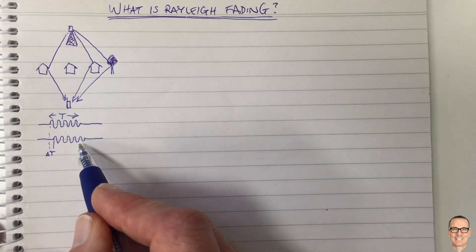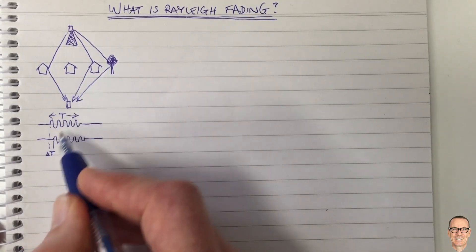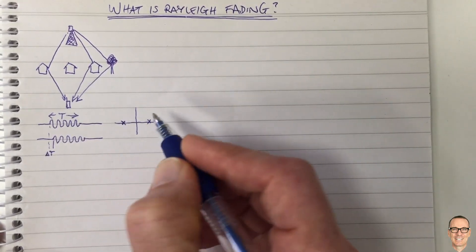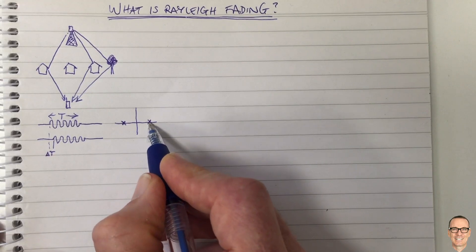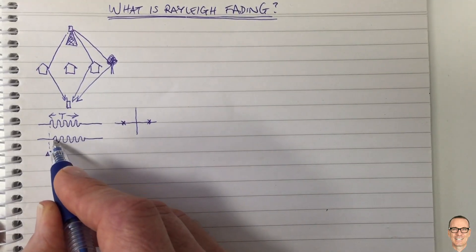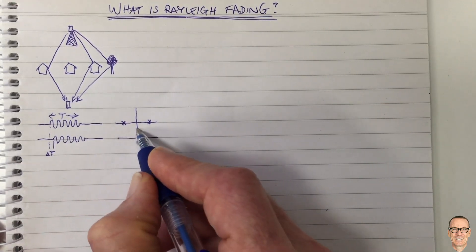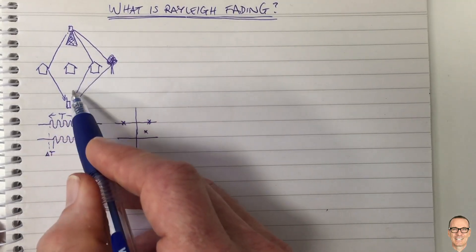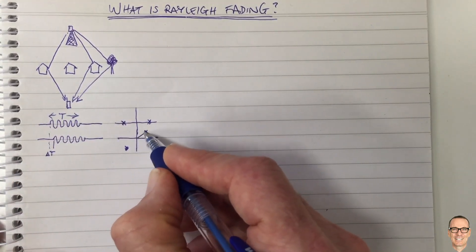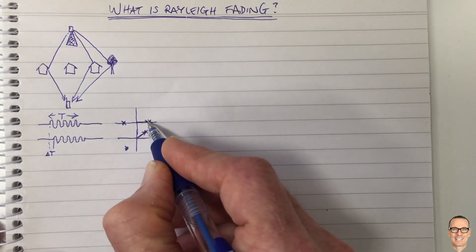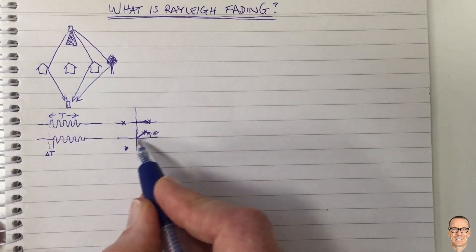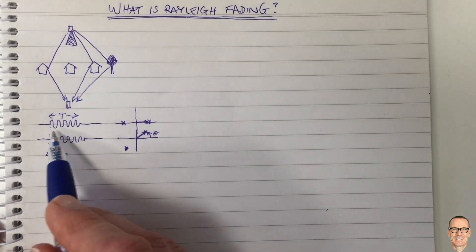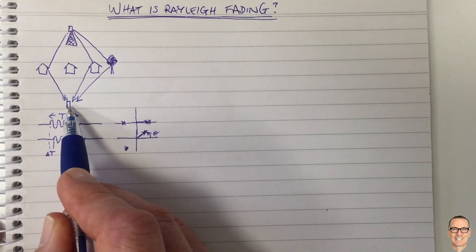Different delays mean different phases. This path might come with zero phase offset. If we're sending binary signals, in our constellation diagram we're either sending a positive or negative sinusoid. The delayed path means the constellation point for that path is going to be rotated. Because energy is lost as it bounces off buildings, it also comes with a different gain — a different amplitude and a different phase.